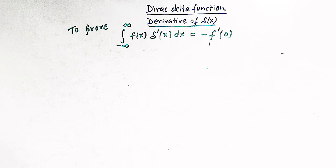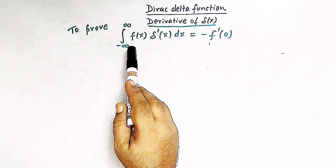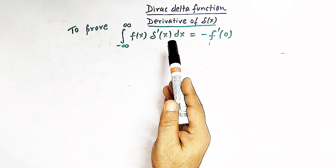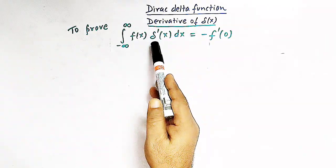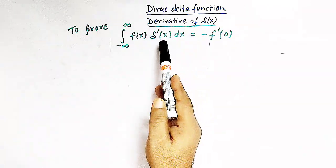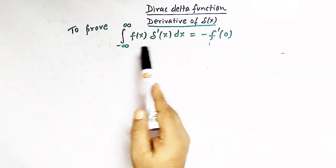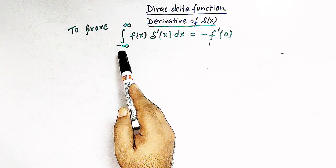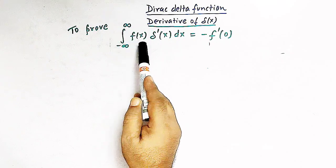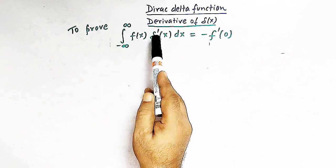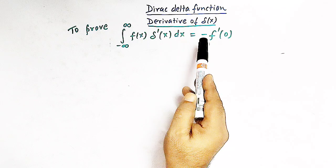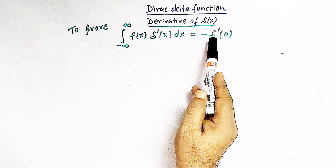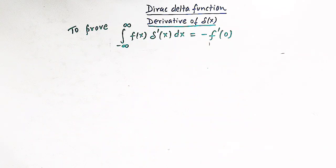In this session, we are going to prove this result or property in which the derivative of the delta function is involved. We have to prove that the integral from minus infinity to infinity of f(x) times delta prime of x dx is equal to negative of f prime of 0.